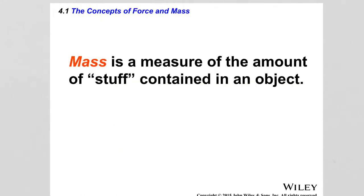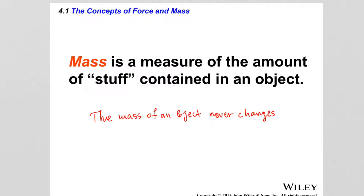An important quantity related to the way forces affect the motion of objects is mass. Mass is a measure of the amount of stuff, or material, or substance contained in the volume of an object. Mass is a constant quantity — it does not change unless the object is broken into pieces or more material is added. The symbol used for mass in physics is m, not to be confused with the unit meters. When dealing with units, m means meters; when dealing with formulas, m means mass.